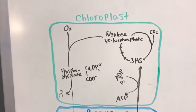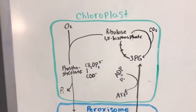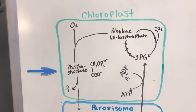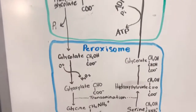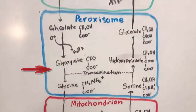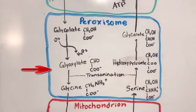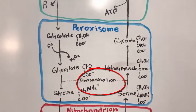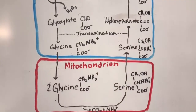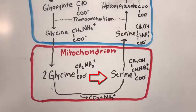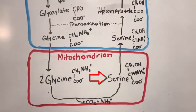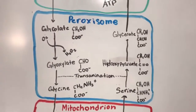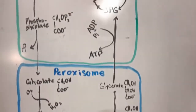Through a series of reactions, rubisco attacks oxygen, eventually forming phosphoglycolate. Phosphoglycolate loses a phosphate, becoming glycolate. Glycolate attacks oxygen and becomes glycoxylate in the peroxisome. Glycoxylate undergoes transamination to become glycine. Glycine then loses carbon dioxide and ammonia and becomes serine. This reaction hydrolyzes ATP. The lost carbon dioxide can eventually pass from the mitochondria back to the chloroplast and into the Calvin cycle and go through photosynthesis.